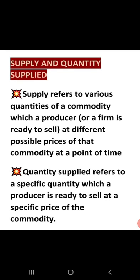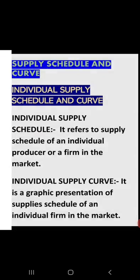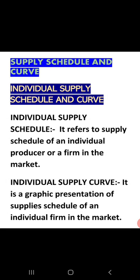Now let's look at supply and quantity supplied. What is quantity supplied? It refers to a specific quantity which a producer is ready to sell at a specific price of the commodity. When any producer agrees to sell a quantity at a specific price, that is your quantity supplied.